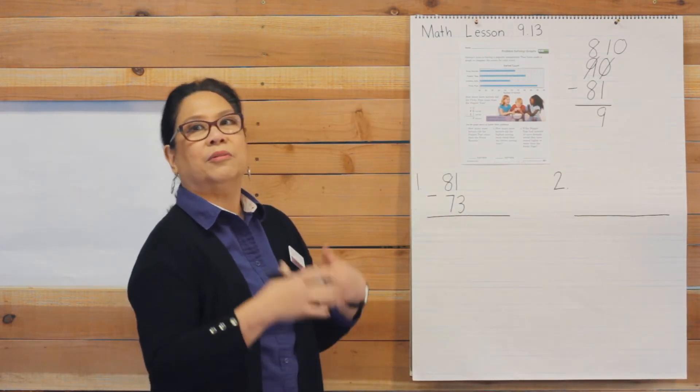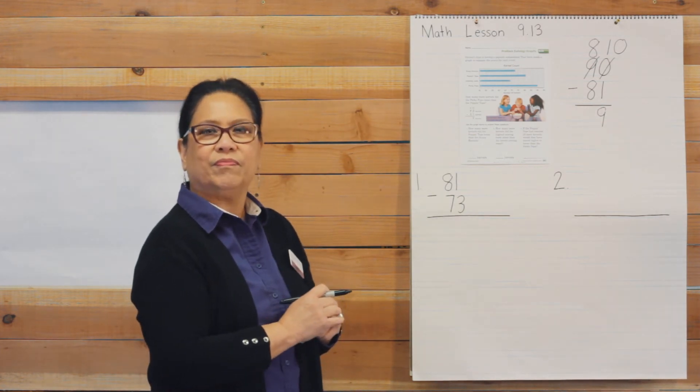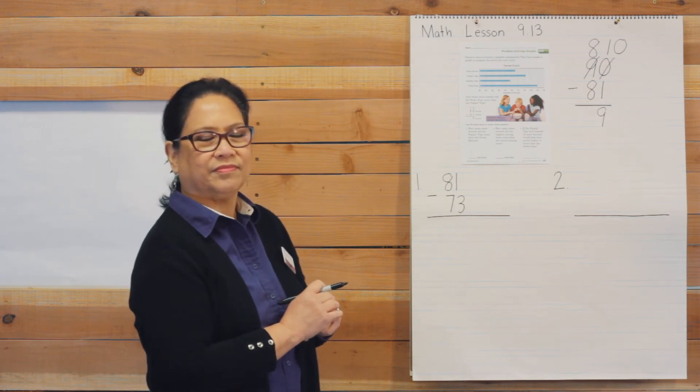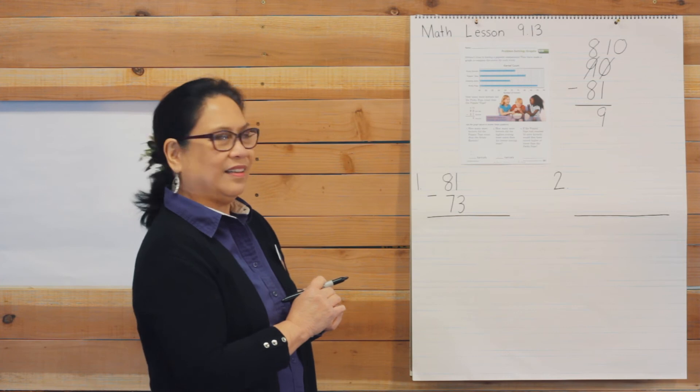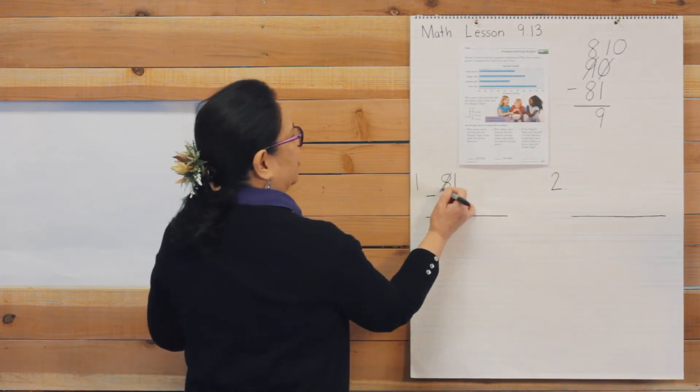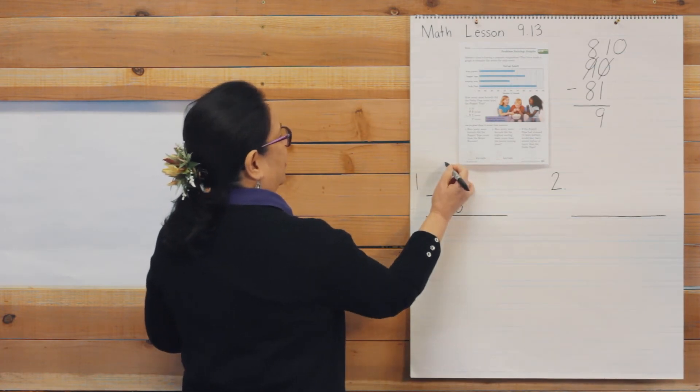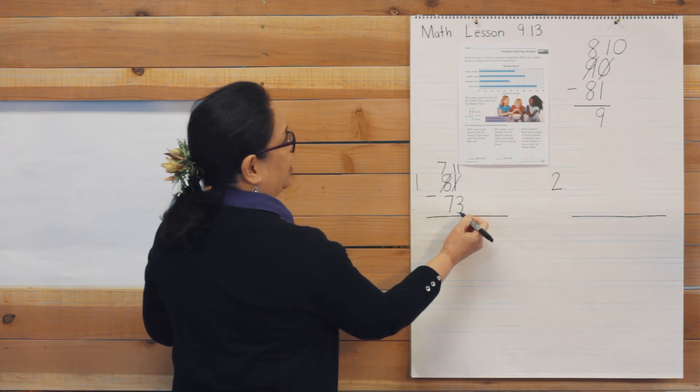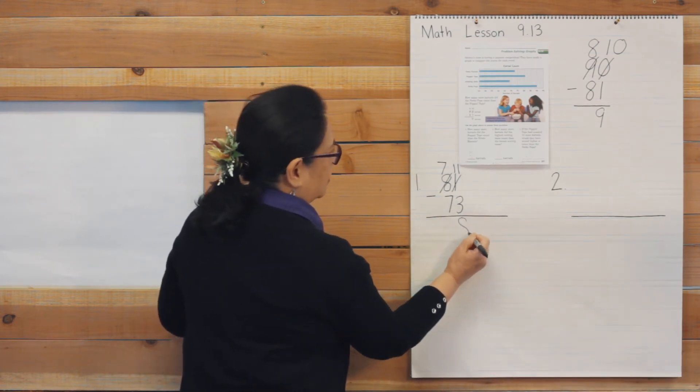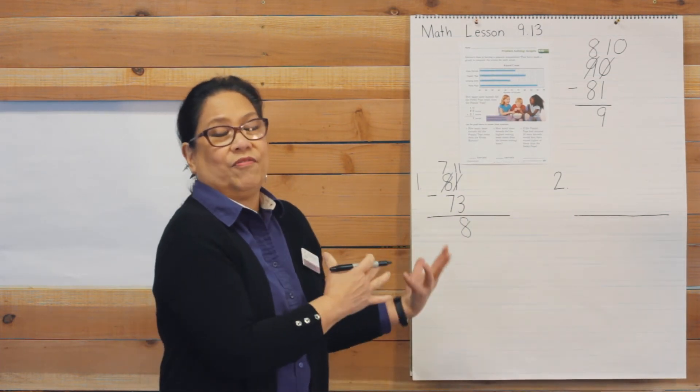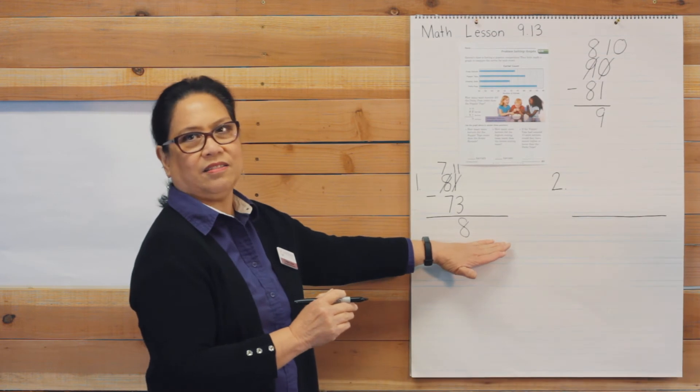So we have to regroup. Go ahead and regroup by yourself. Okay. I hope you're regroup. Let us regroup. We'll take a 10 out of the 8. That makes 70. We'll put the 10 here and move the 1 there. 11 take away 3 is 8. 7 take away 7 is 0, but we never put that as the first number, right? So the answer is 8 more.